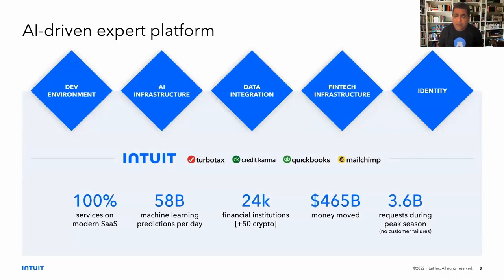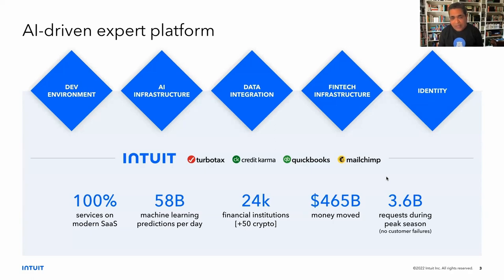Most of you should know Intuit from our flagship products like TurboTax, QuickBooks, Mailchimp, Credit Karma, etc. We are one of the largest SaaS companies out there. On the top you can see the five main platform areas within Intuit that power all these products, and on the bottom you can see the scale at which we operate.